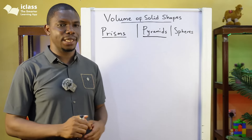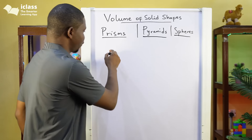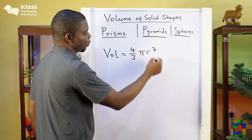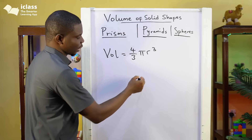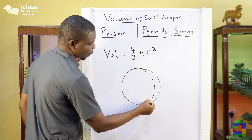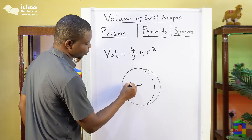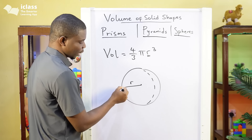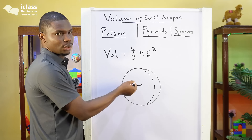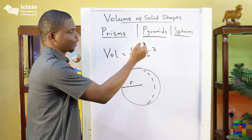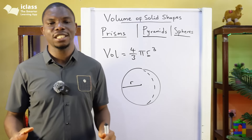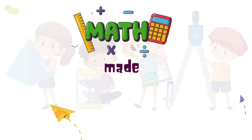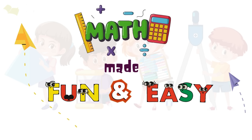Finally, for spheres, the volume of a sphere is four-thirds pi r cubed. So if this is a football, all you need to calculate its volume is the radius — four-thirds pi r cubed. We've now listed these formulas and we are going to use them to do some practice questions. You're watching Maths Made Fun and Easy with Ikenna, Maths Teacher.